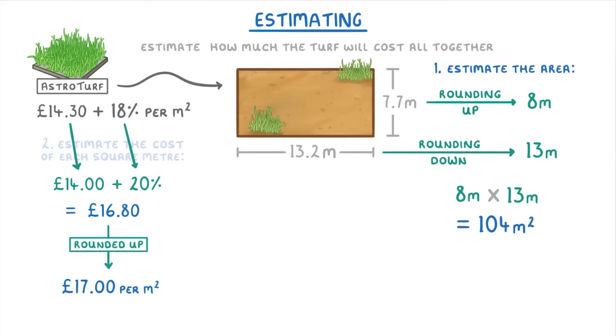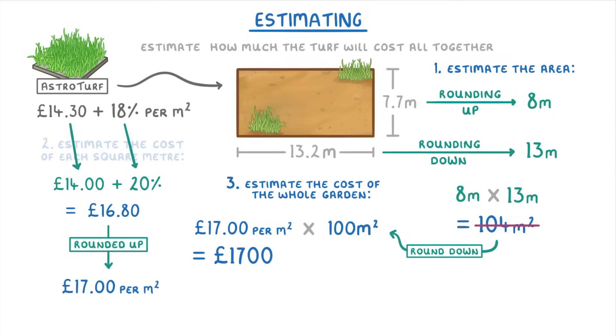So now that we know how big the garden is, and how much the turf costs, we can finally estimate the cost of the whole garden by multiplying the cost of £17 per square metre by the area of the garden. But instead of using 104, we can round it down to 100, which will give us a total cost of £1700.